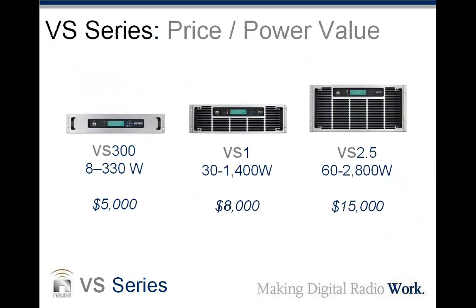Let's talk about price, because in solid-state low-power FM transmitters that's often what most people are interested in. All of these features and performance didn't impact the price. The VS300 is $5,000 — compare that to a typical digital exciter in the industry, which today runs $10,000 to $15,000 by itself. The 1-kilowatt version is $8,000 and does up to 1,400 watts. The 2.5-kilowatt version is only $15,000. These are an amazing combination of price and performance.